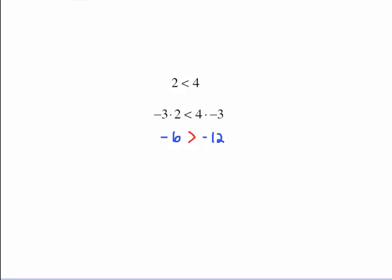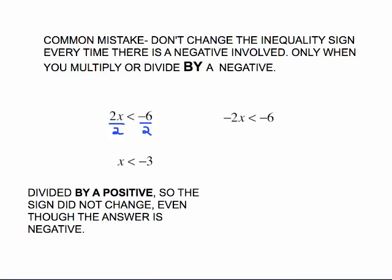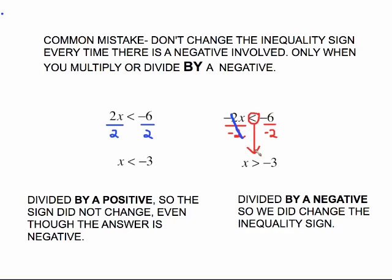There is a common mistake associated with this: you don't change the inequality sign every time you see a negative in the problem — only when you actually multiply or divide by a negative. For example, 2x less than negative 6: divide both sides by positive 2, giving x less than negative 3. No reason to change the sign — yes, there's a negative, but we divided by positive 2. However, for negative 2 times x, to undo it you divide by a negative, so you circle that inequality sign, switch it around, and then do the arithmetic. Because you divided by a negative, you do change the inequality sign.